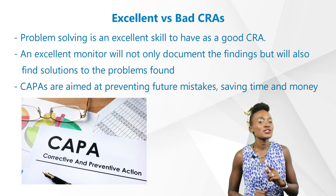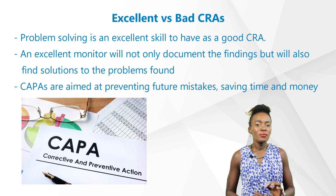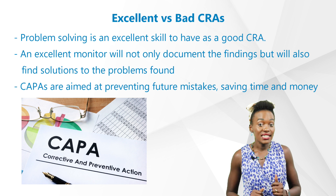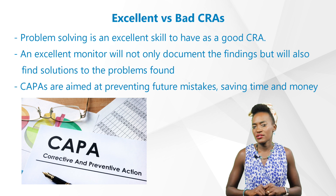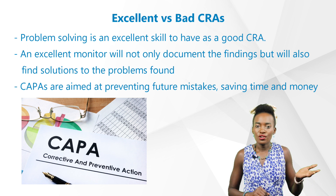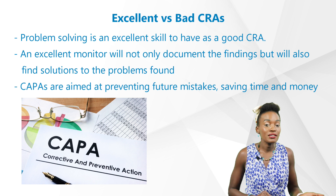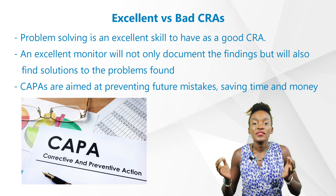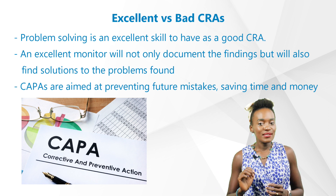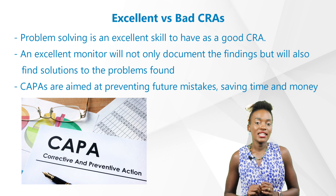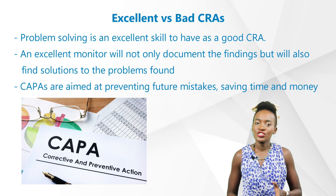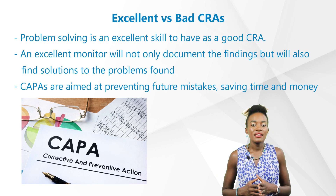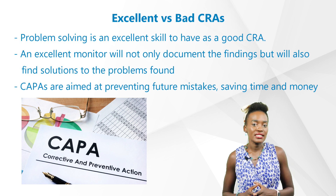Point number two goes to problem solving. Problem solving is an excellent skill to have as a good CRA. During monitoring activities on the site, we have two types of CRAs: one that visits the site with the approach to look for problems and document them in their reports, and one that visits the site with the mindset of: I'm there to support the site. An excellent monitor will not only document the findings, but will go an extra mile to find solutions to the problems found so as to avoid future similar issues from occurring — something we call corrective and preventive actions, or CAPAs.